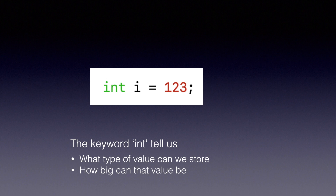We can't store any integer in i — it has to be in a defined range. On the next slide we will see eight different types of primitives. We will discuss what can be stored in them and also what the sizes of different variables are.